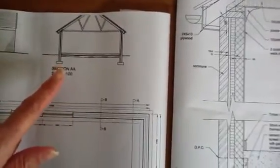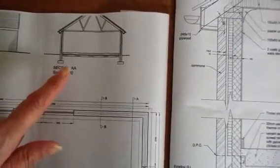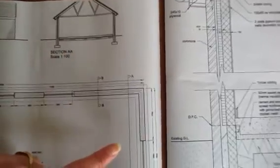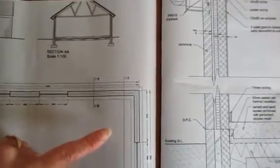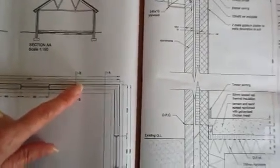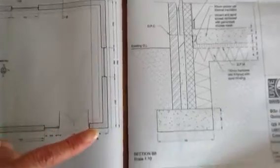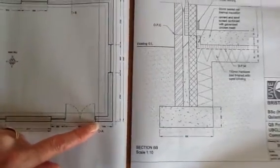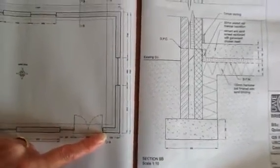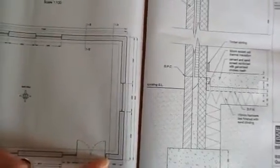If we transpose that information onto here, we can imagine that our roof slopes from this point here on our rear elevation up to the ridge and slopes down to our front elevation here. So we now know the orientation of the roof.